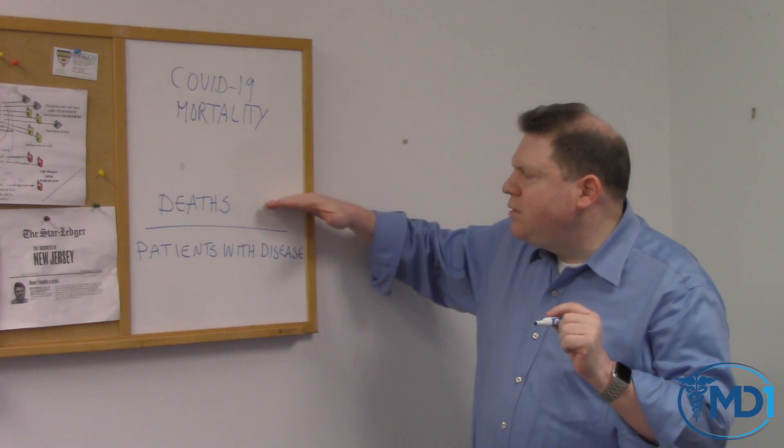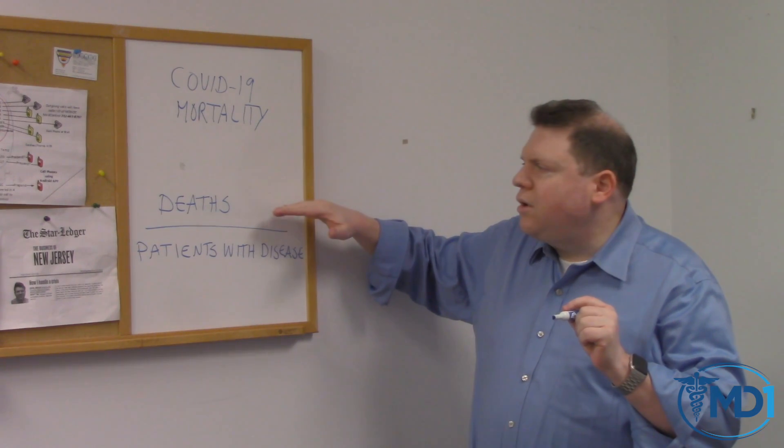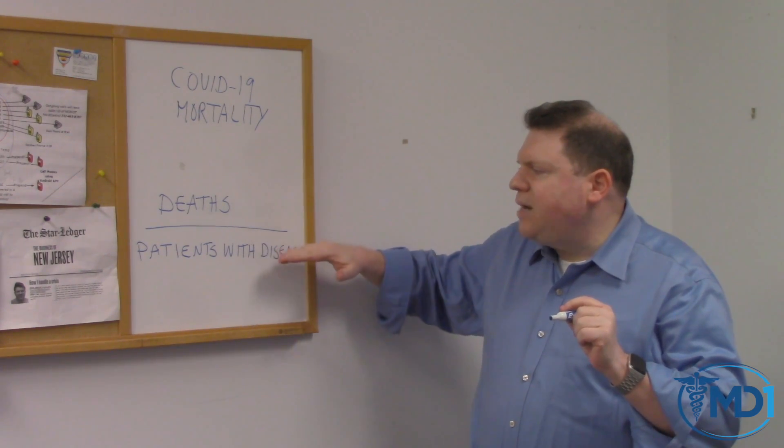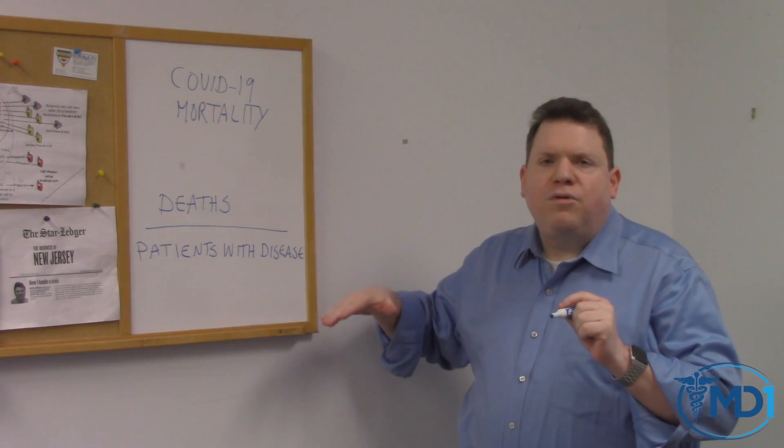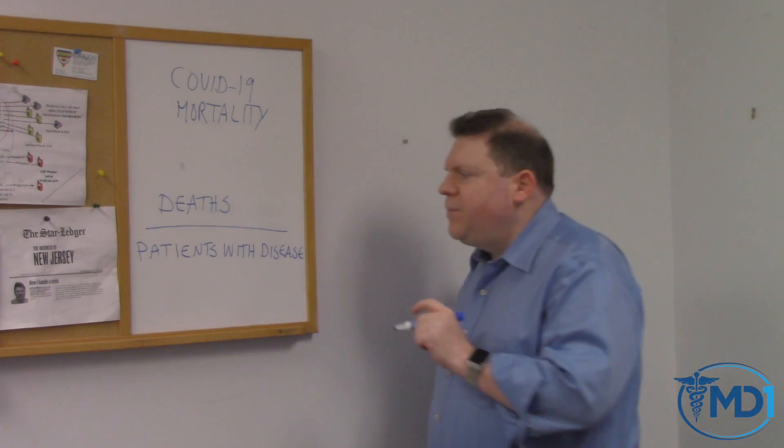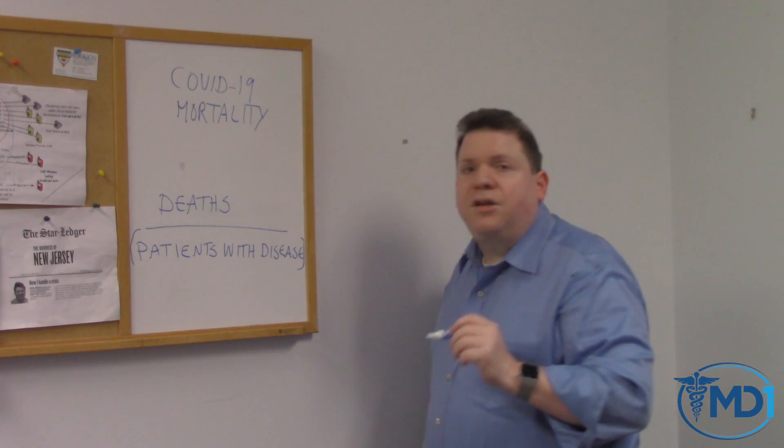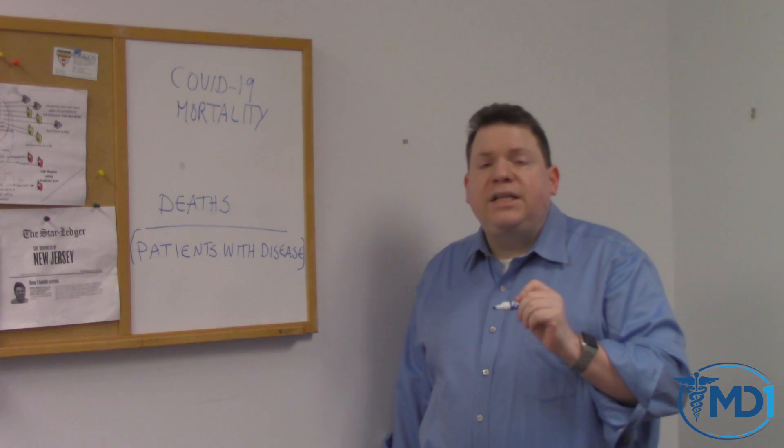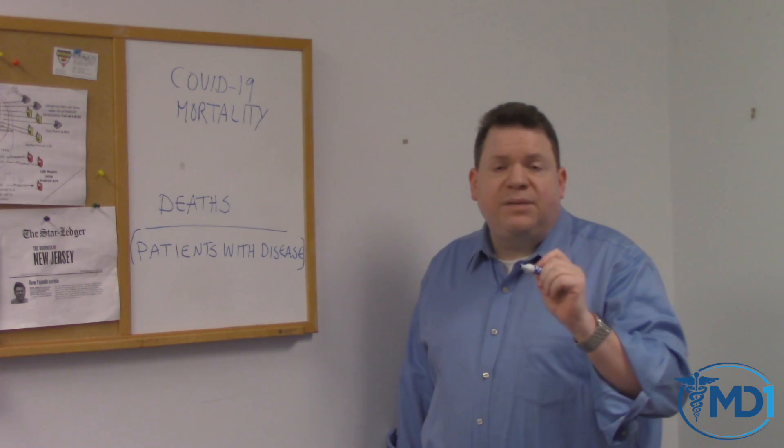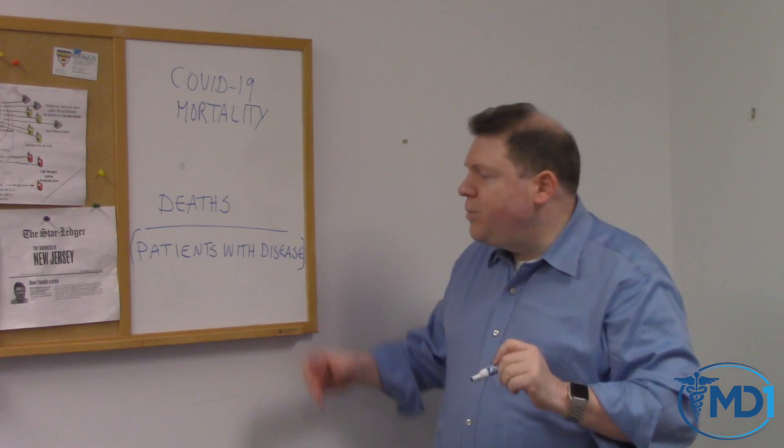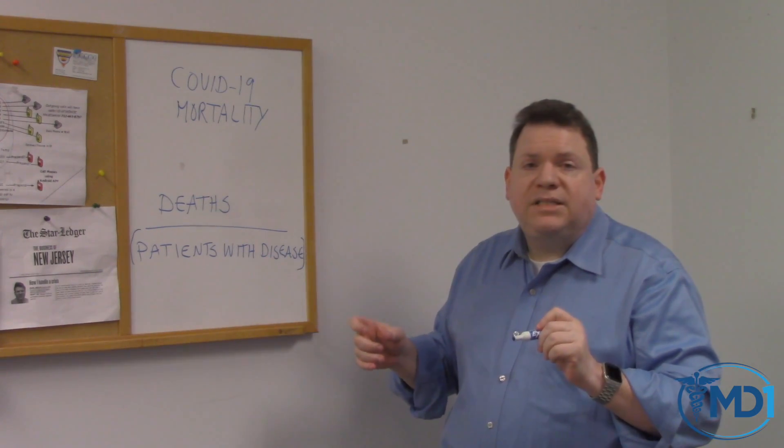Mortality has a numerator and a denominator. It's the number of deaths, number of people who've died from COVID-19, divided by the patients with the disease. And that's how you get the overall mortality. Now, right now the number of patients with the disease is something that's an unknown because we haven't been routinely testing people. We haven't been testing people who have no symptoms and we haven't been testing people with minimal symptoms. So because we don't know this denominator, we don't know what the true mortality is of this disease.